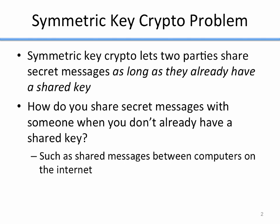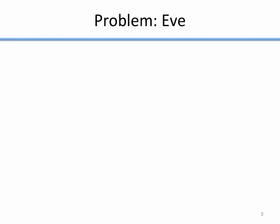Lots of computers on the internet want to be able to communicate through encrypted means and they've never exchanged a key before. For example, if you go to Amazon to make a purchase and use your credit card, you want that information to be encrypted between you and Amazon. But you've never gone to Amazon to exchange a secret key, so how do you make that work?